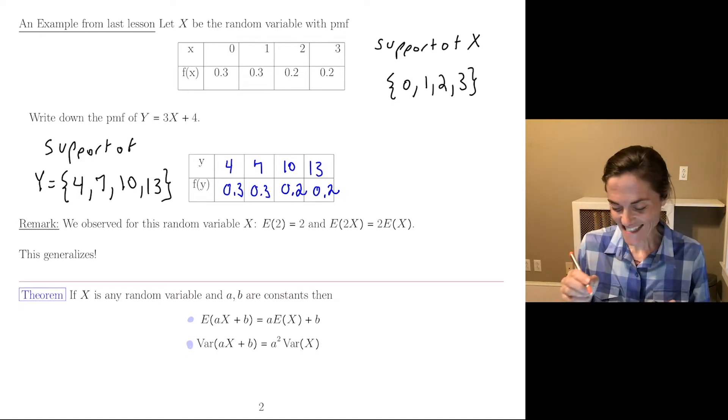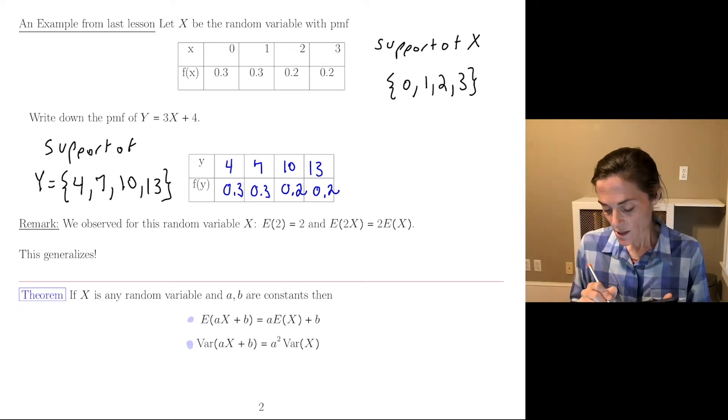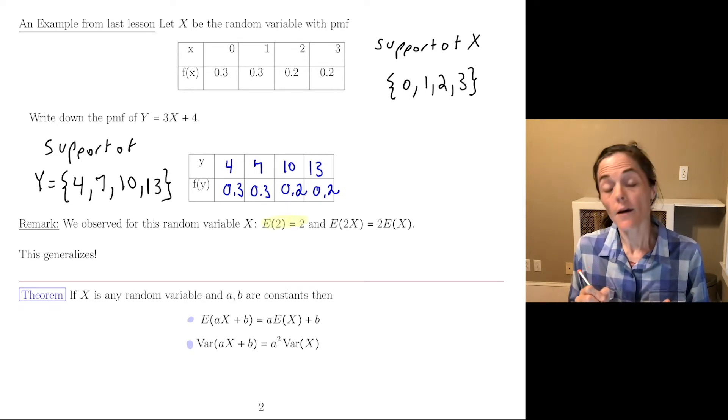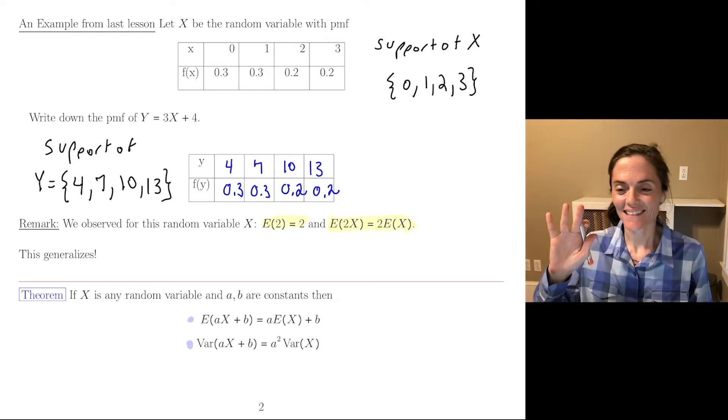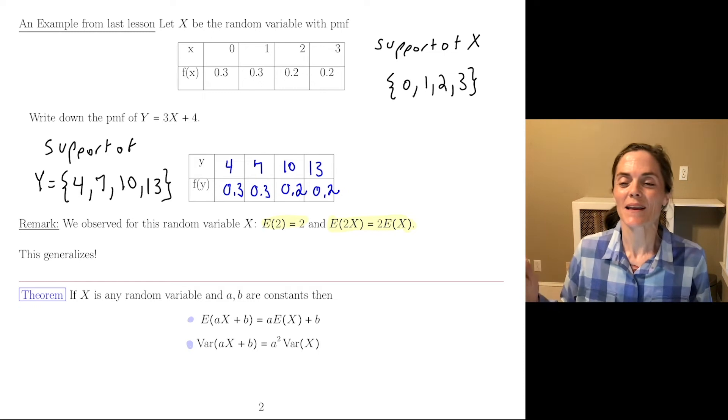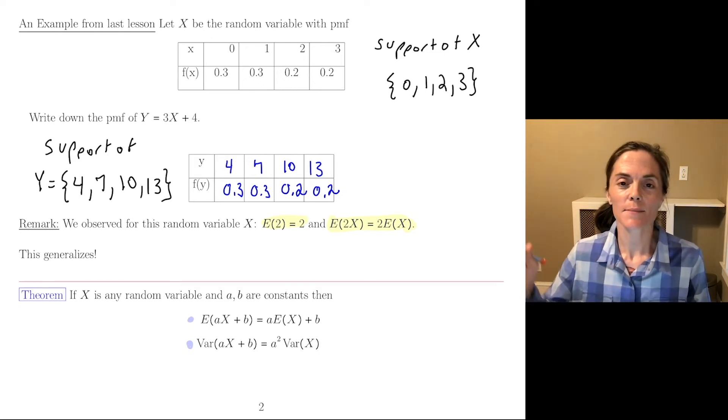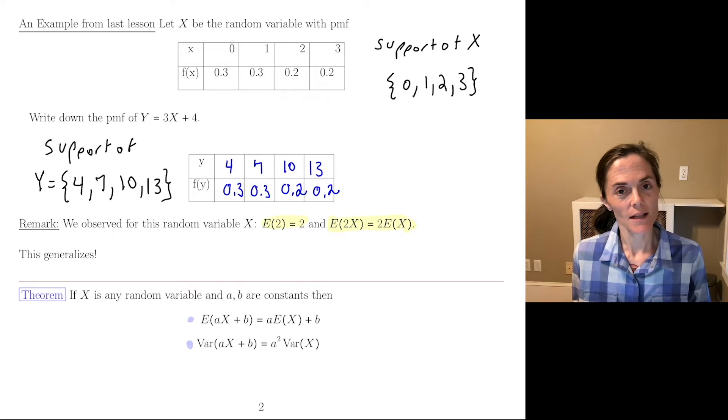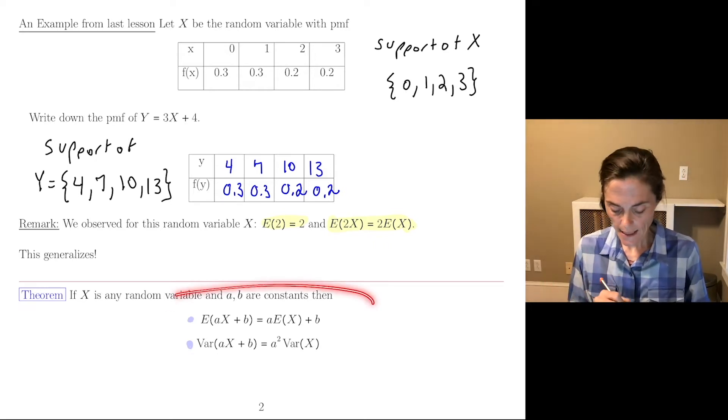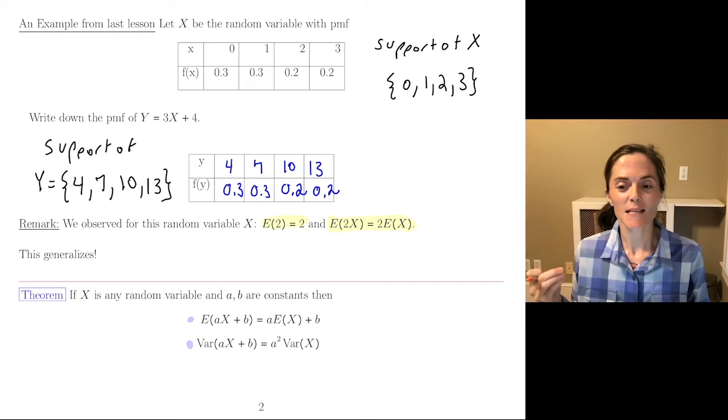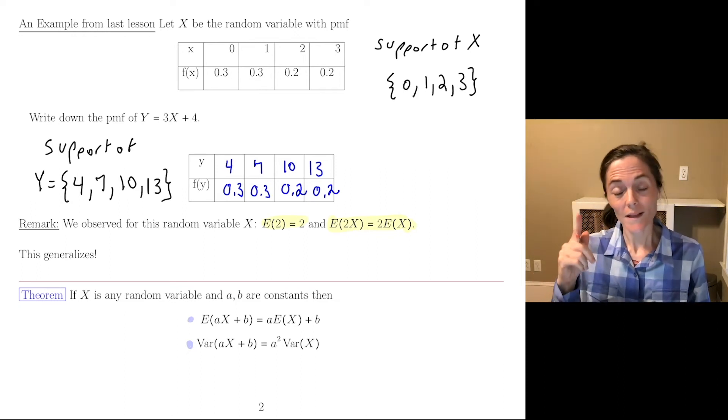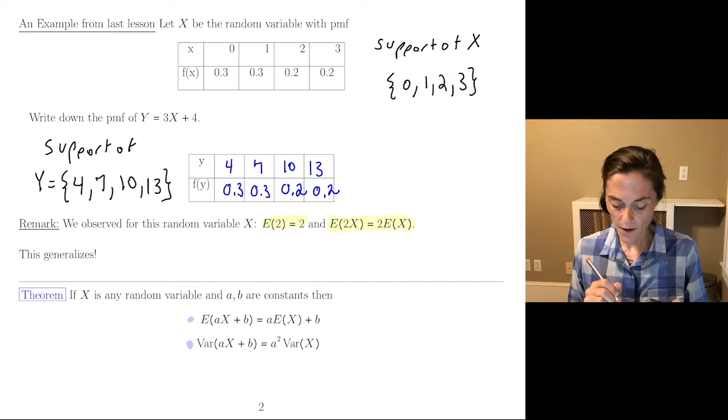I also used this example in this video because of this. So we calculated for this capital X, the expected value of 2 and the expected value of 2X. And we saw expected value of 2 was 2, expected value of 2X was 2 times expected value of X. And this generalizes. And so the theorem is here.